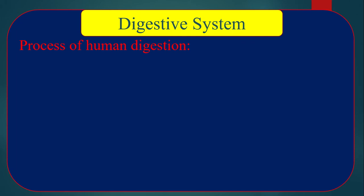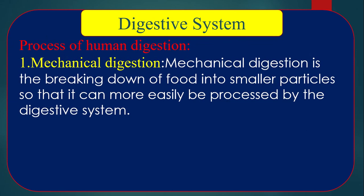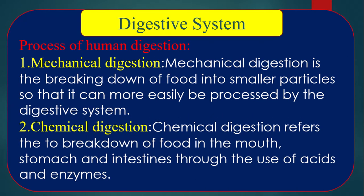Food substances are turned into absorbable form in two ways: number one, mechanical digestion, and number two, chemical digestion. Mechanical digestion is the breaking down of food into smaller particles so that it can more easily be processed by the digestive system. Chemical digestion refers to the breakdown of food in the mouth, stomach, and intestines through the use of acid and enzymes — meaning chemical reactions take part in chemical digestion.